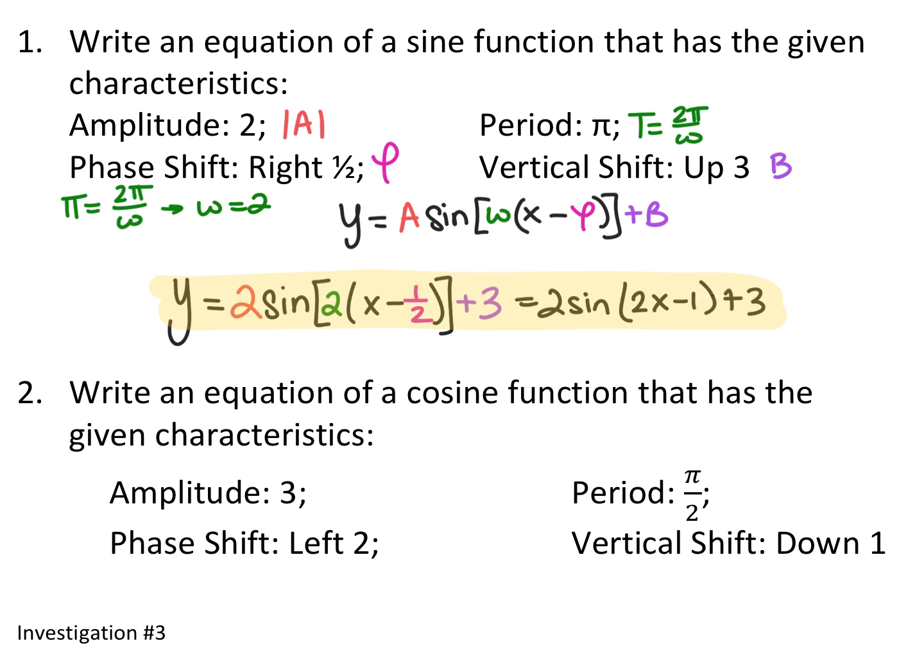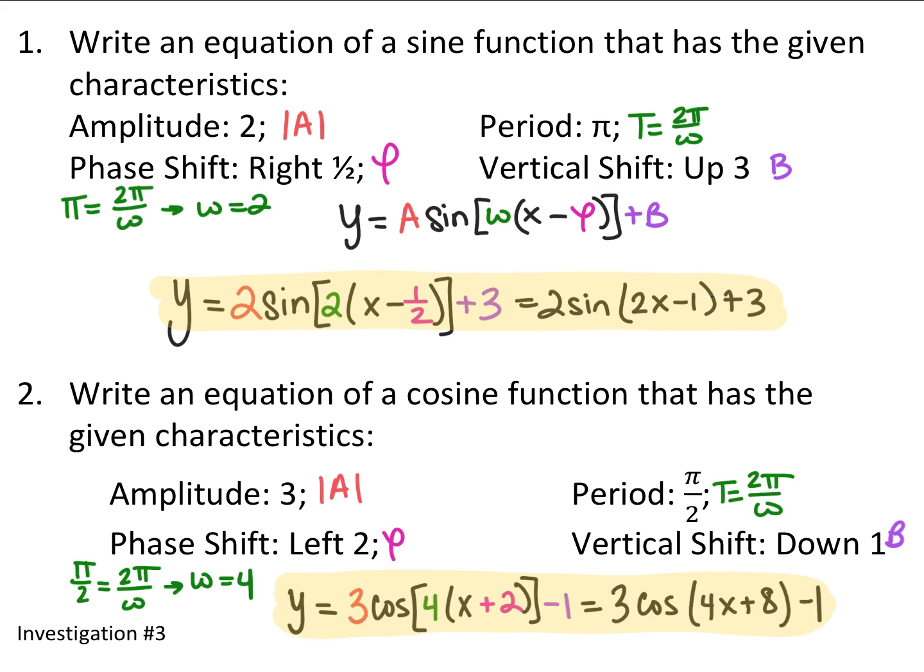For a cosine function with amplitude 3, phase shift left 2, period π/2, and vertical shift down 1: the amplitude is 3. The phase shift left 2 gives x + 2. Since the period is π/2 = 2π/ω, we get ω = 4. Subtract 1 for the vertical shift. The result is y = 3cos[4(x + 2)] - 1, or y = 3cos(4x + 8) - 1.